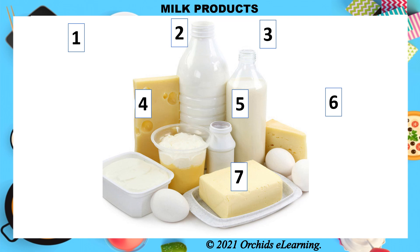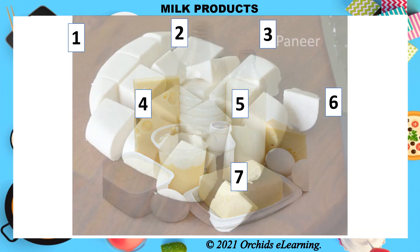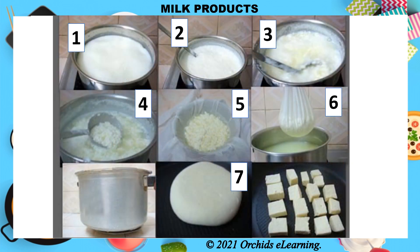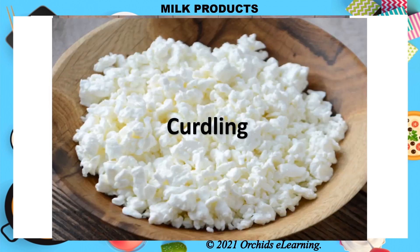Products made from milk are known as dairy products. The first is paneer or cottage cheese. Paneer can be made by adding lemon juice or vinegar to hot milk; this process is called curdling. This results in the separation of milk into solid and liquid parts. After removing the liquid part, we get the solid, which is paneer.